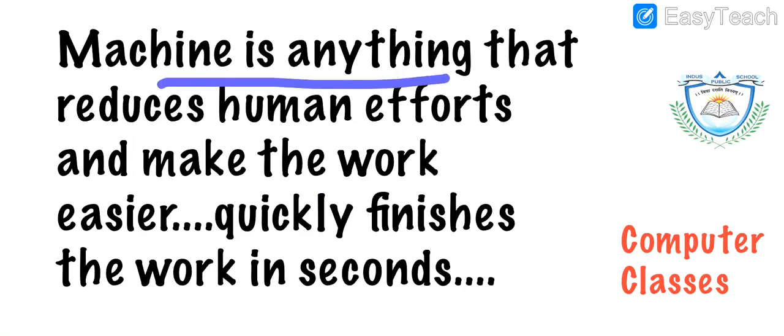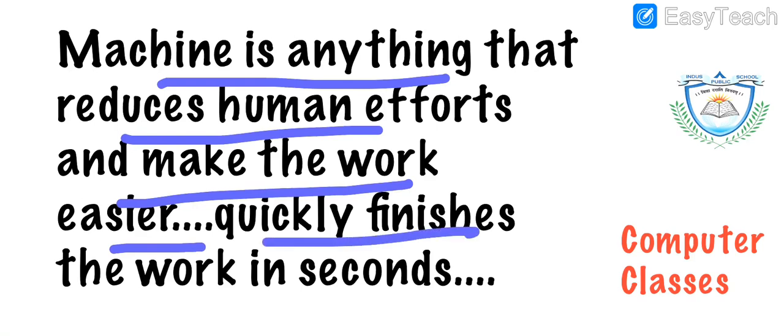Machine is anything that reduces human efforts and makes the work easier. It quickly finishes the work in a second. Machine can be anything. It's not only that computer is the only machine. Machine is anything that reduces our efforts and makes our work very easy. And also, it is super fast. It finishes the work in seconds.